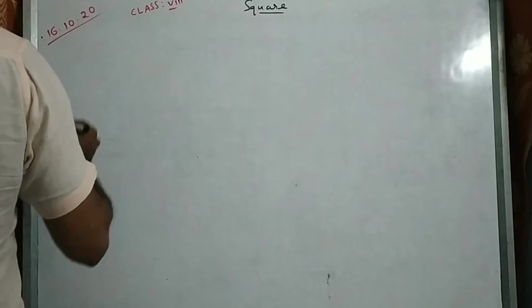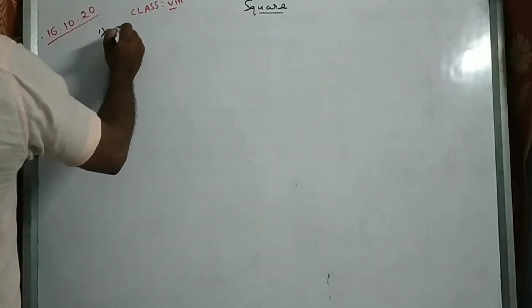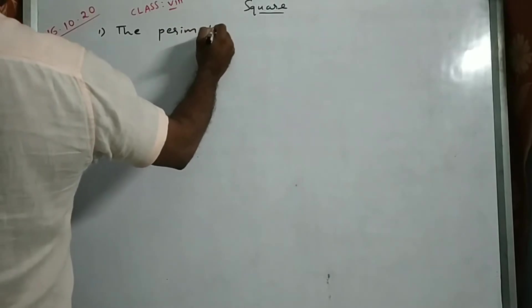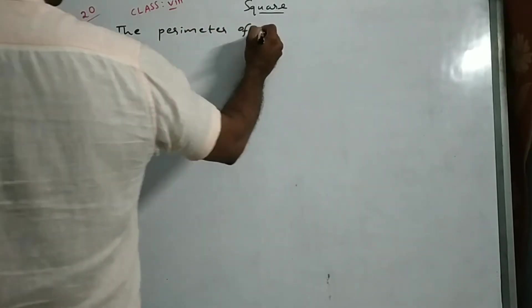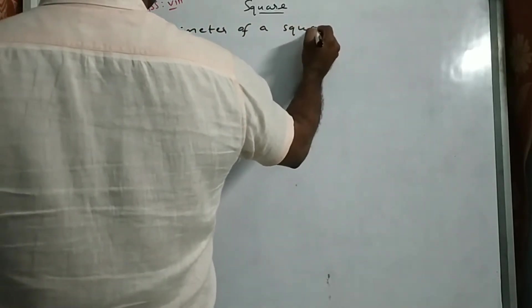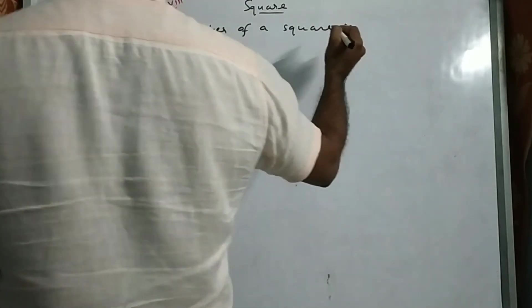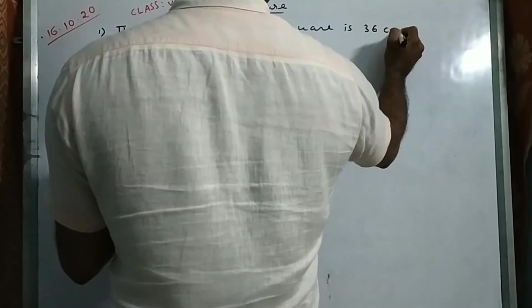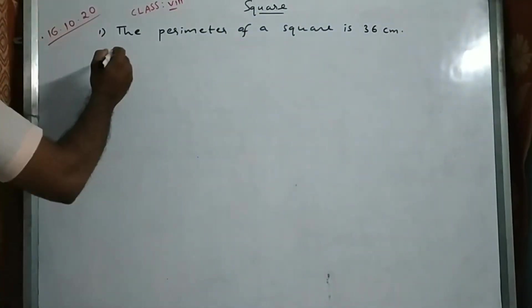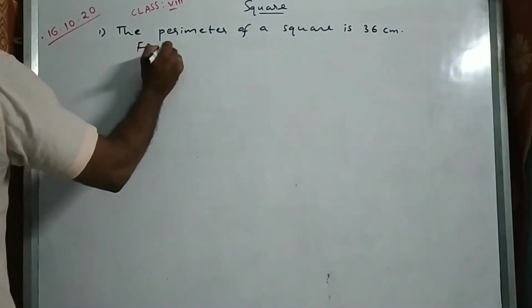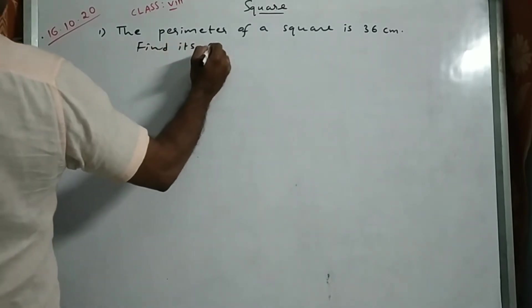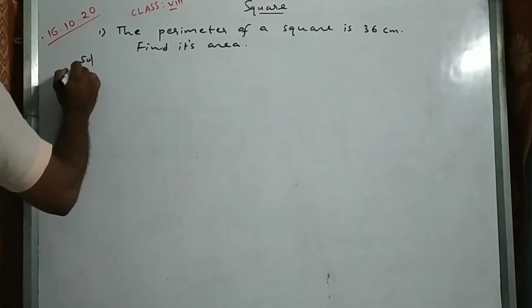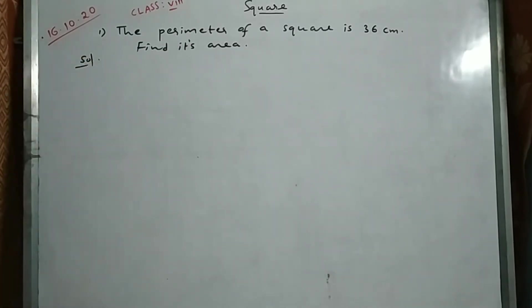First question: The perimeter of a square is 36 cm. Find its area. To solve this, we should know two formulas.